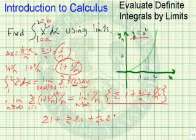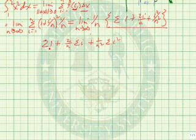We have the summation of 1 plus 2 over n times the summation of i plus 1 over n squared times the summation of i squared. Now, we have convenient formulas for each of these. Here, if i goes from 1 to n, we wind up with n as a result.